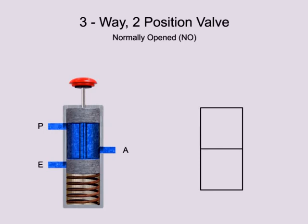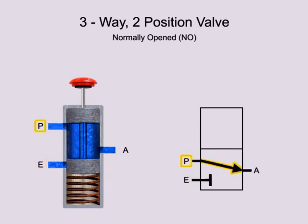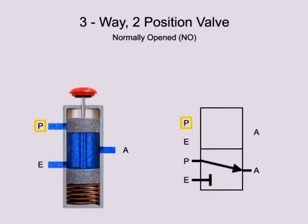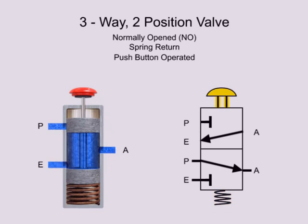Here is another three-way, two-position valve. This valve also has an inlet port P, exhaust port E, and output port A, but they are in a different configuration. In its normal position, exhaust port E is blocked and fluid flows from pressure port P to outlet port A. In the second position, pressure port P is blocked and fluid is allowed to flow from outlet port A to exhaust port E. The valve is also spring return and push button operated.